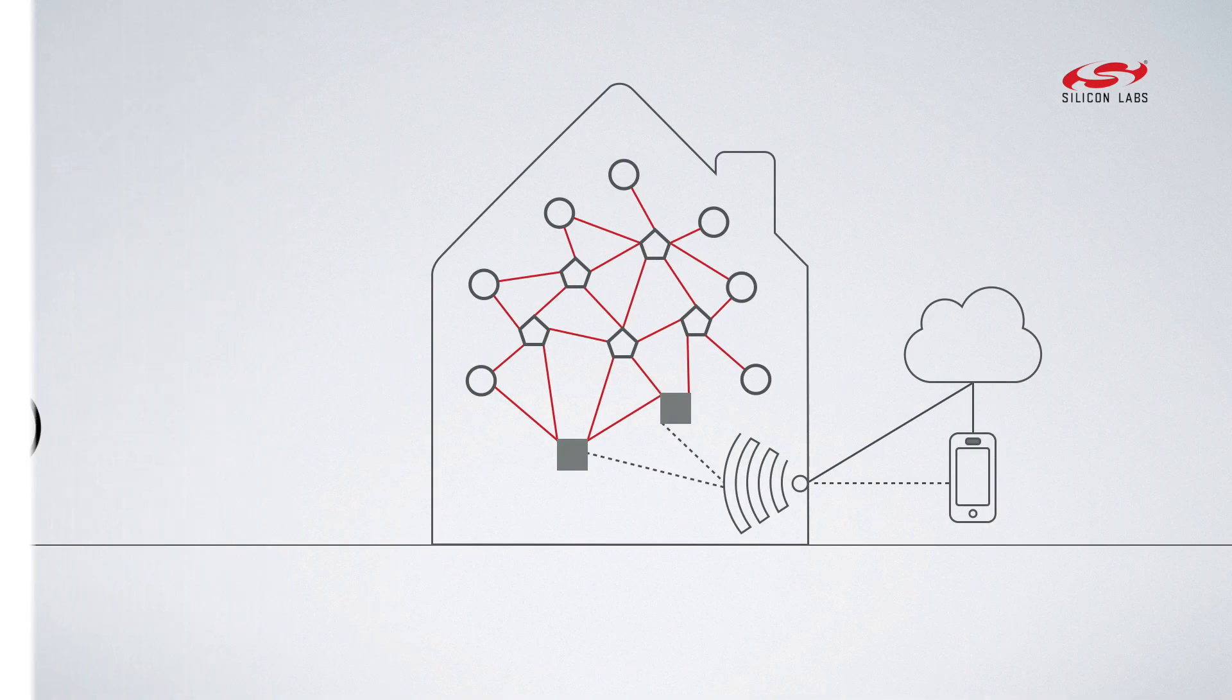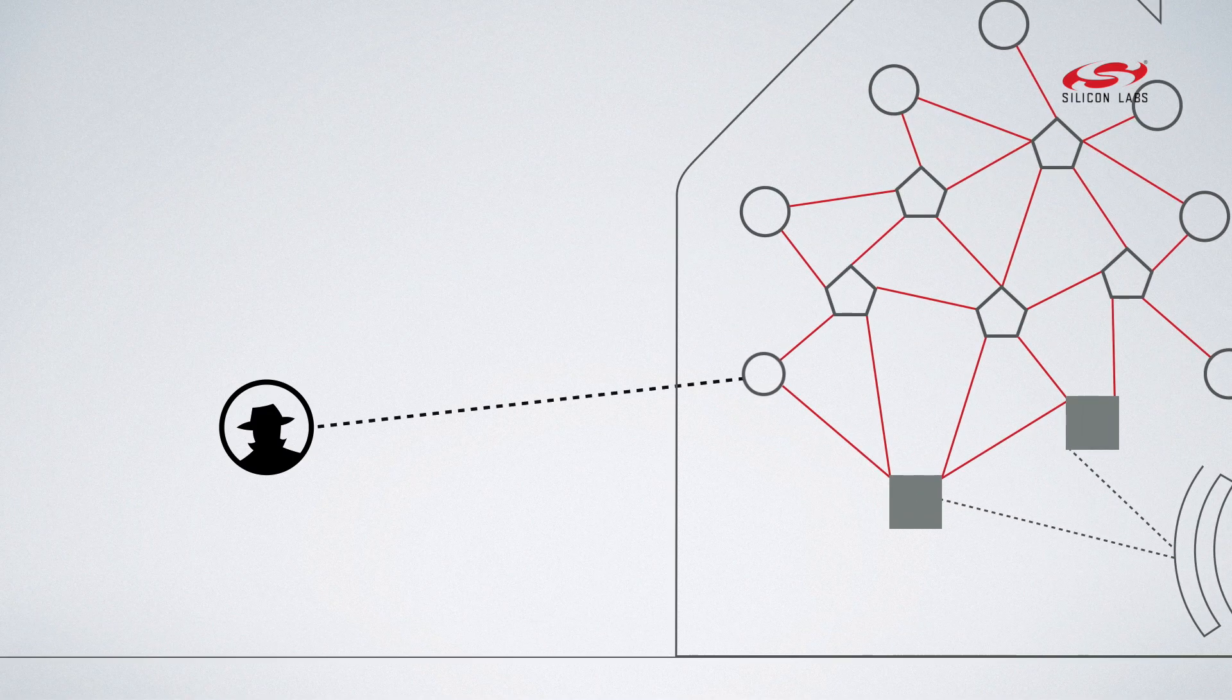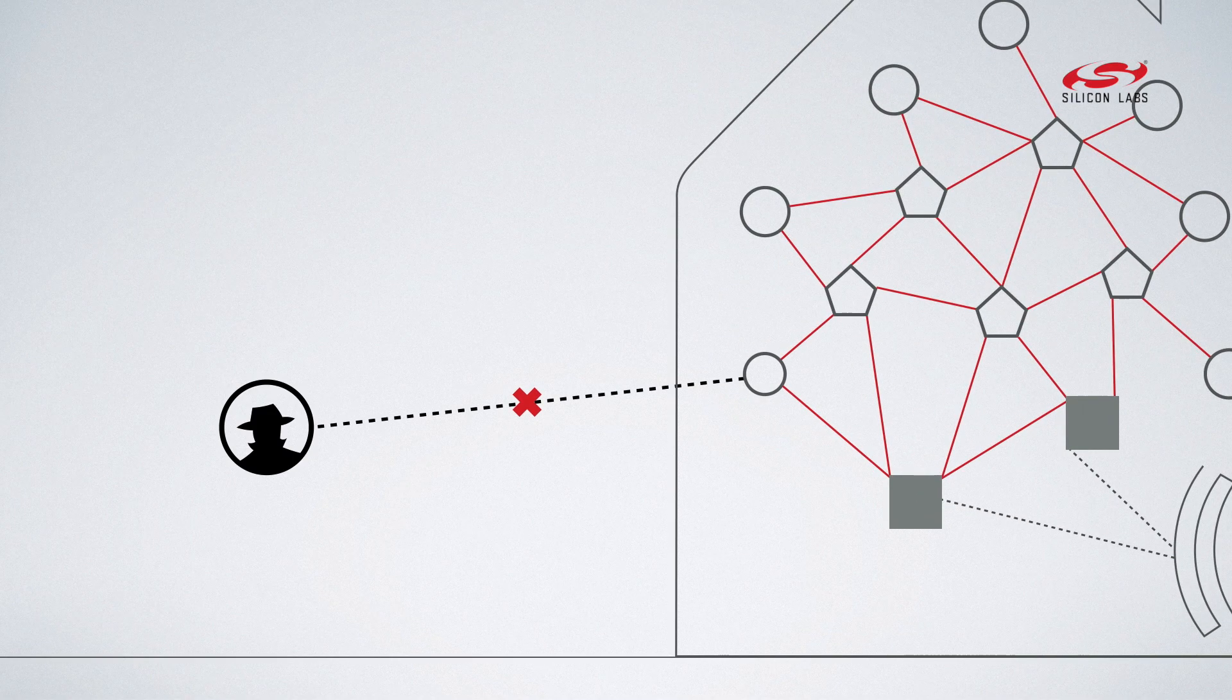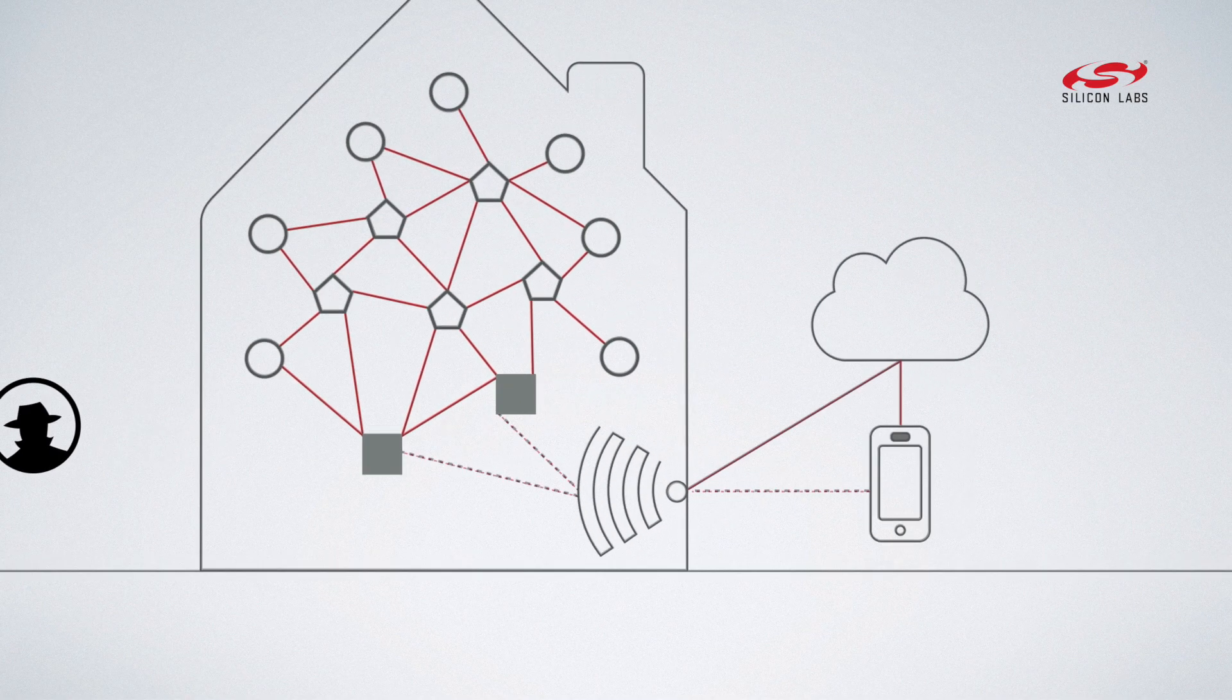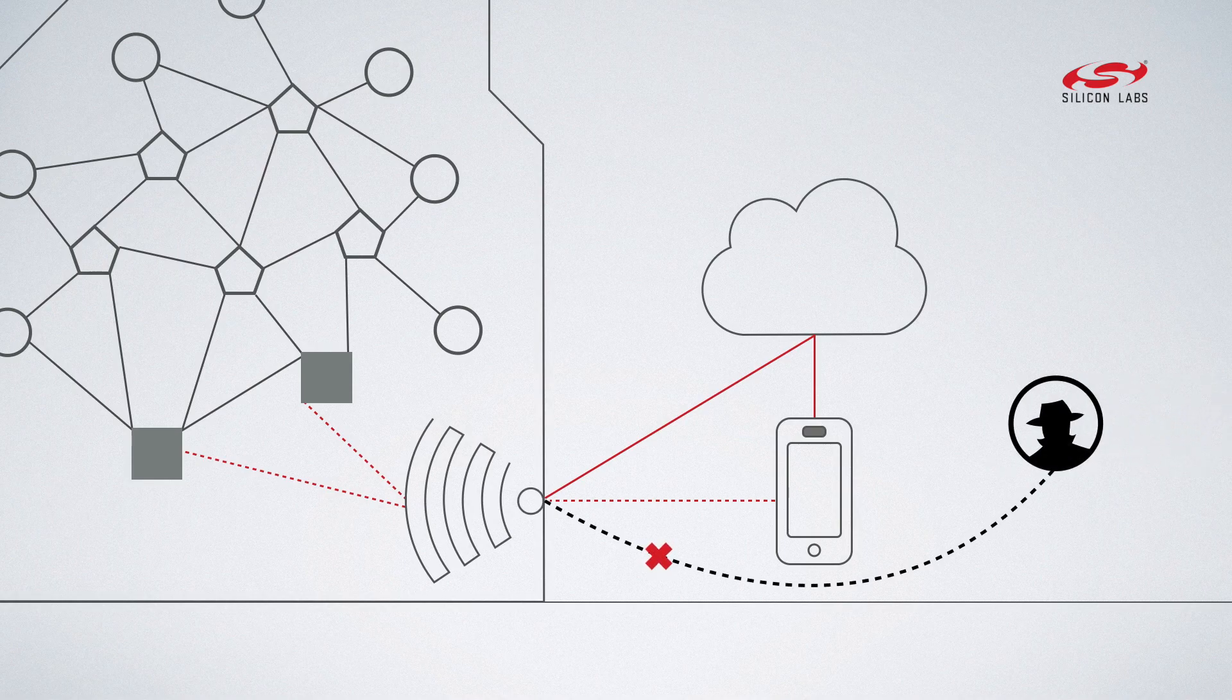Thread networks are wireless networks and need to be secure against over-the-air attacks. They are also connected to the internet and need to be secure against internet attacks.